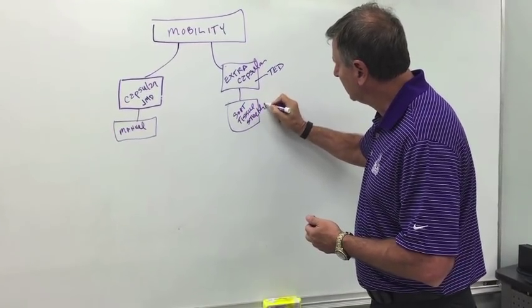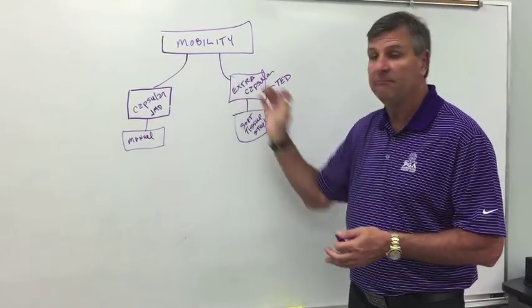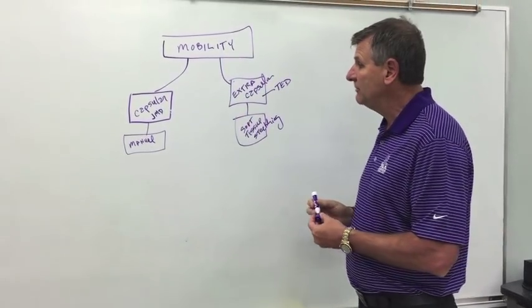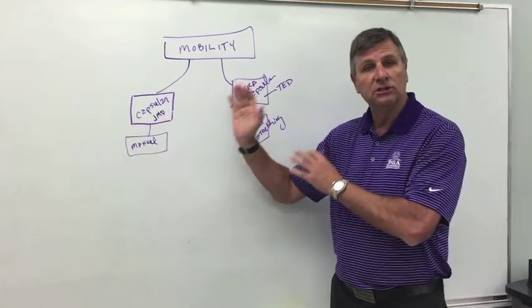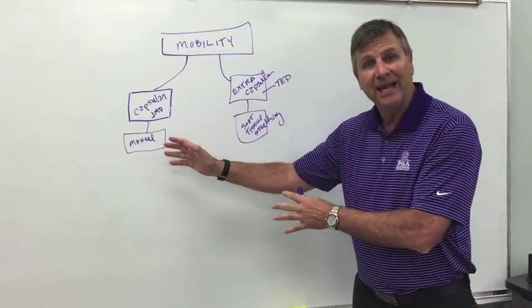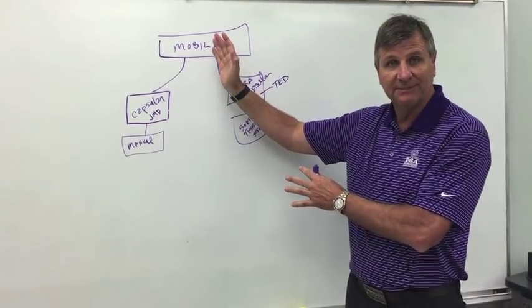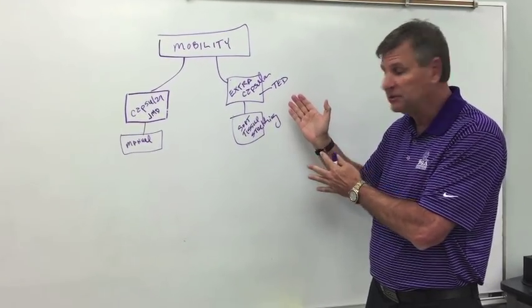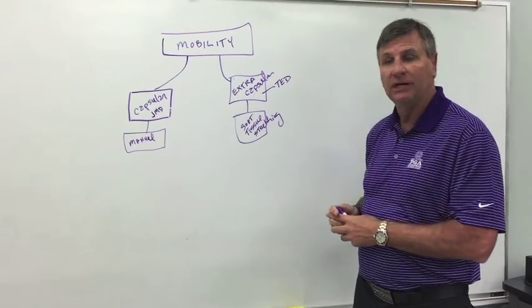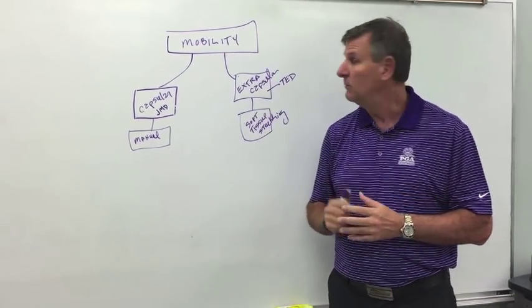Now it's highly likely that a person could have both of these. But if that's the case, we always begin with the capsular problem first, restore normal accessory movement, and reassess. If we then have a TED, we work on soft tissue stretching and then reevaluate.